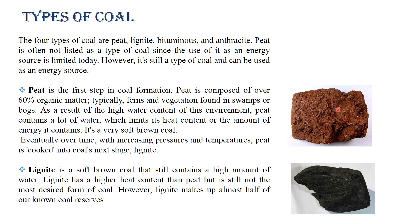This is the diagram of peat. Eventually, over time, with increasing pressures and temperature, peat is converted into coal's next stage: lignite. Lignite is a soft brown coal that still contains a high amount of water. Lignite has a higher heat content than peat but is still not the most desired form of coal.